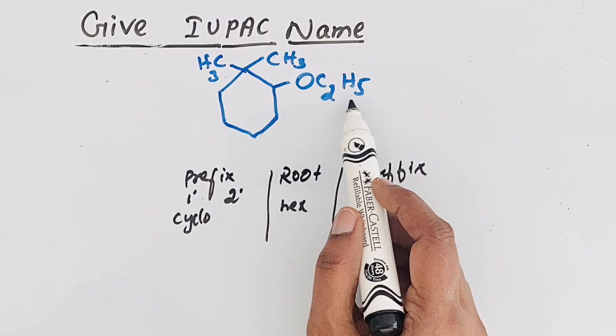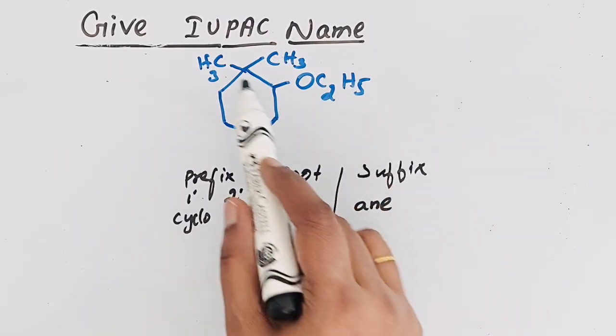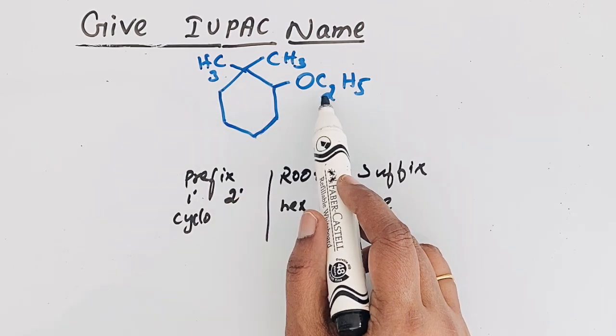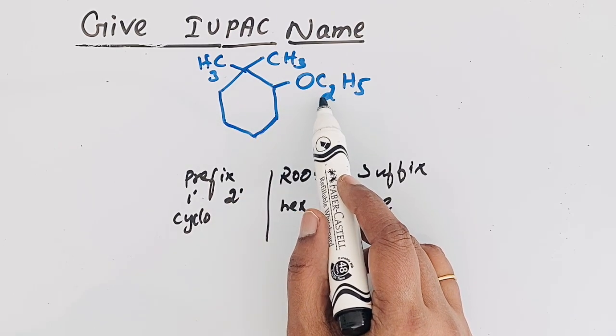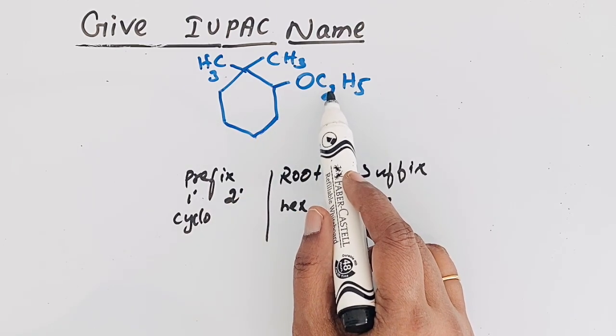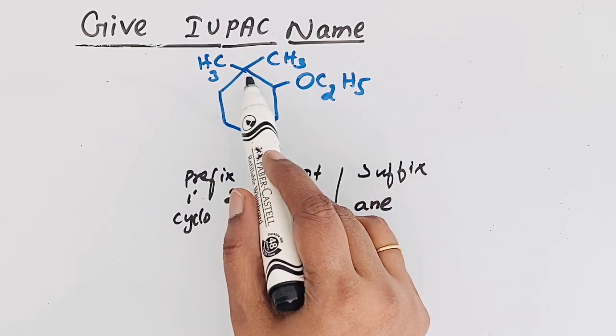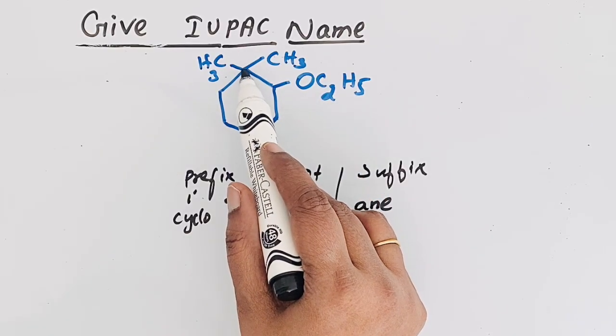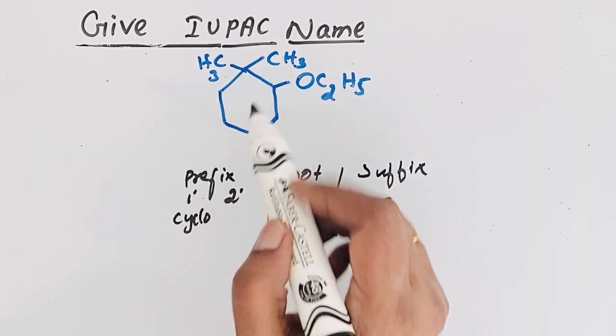If you look at the two substituents, C2H5 is present (ethyl group) and methyl group is present. Even though based on alphabetical order ethyl group gets the higher priority, here we have to see that there is more branching present.